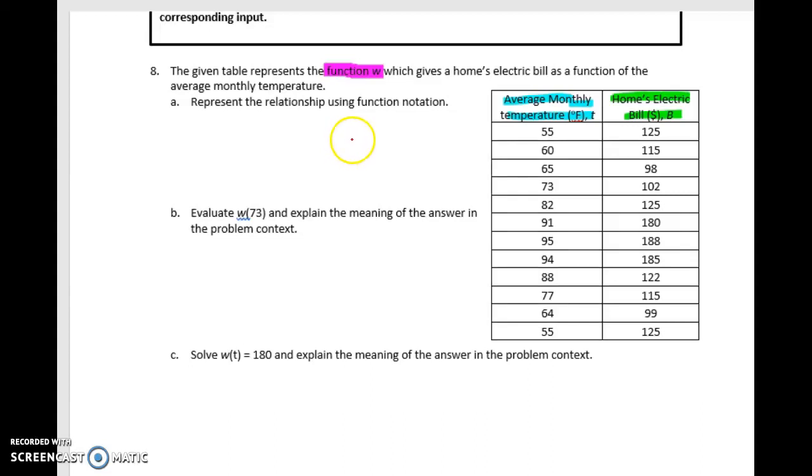In this video, we're going to work a little bit more with function notation, so we're going to look at question 8 and question 9. In this, we have seen this set of data before, where our input is the average monthly temperature in degrees Fahrenheit T, and the home electric bill in dollars B.